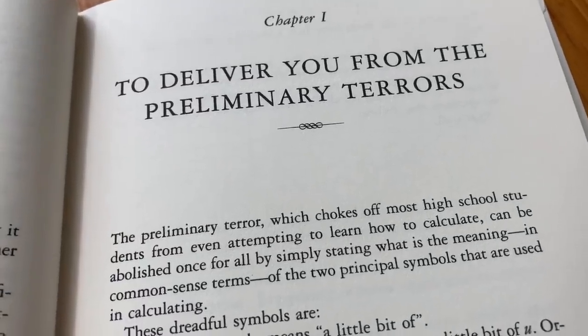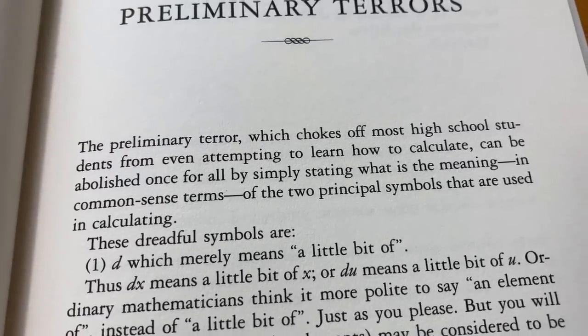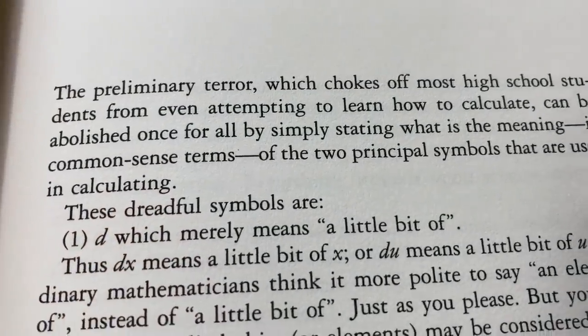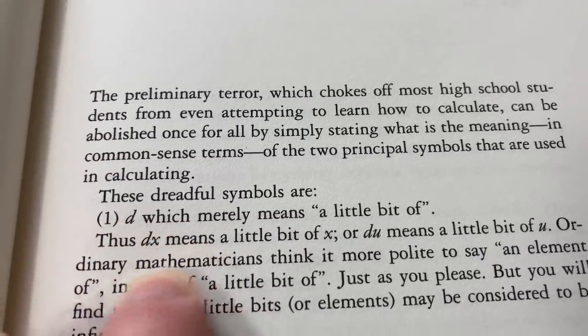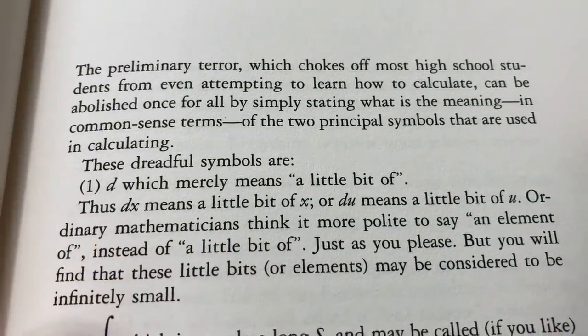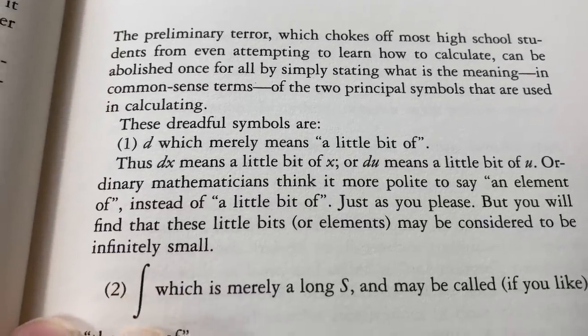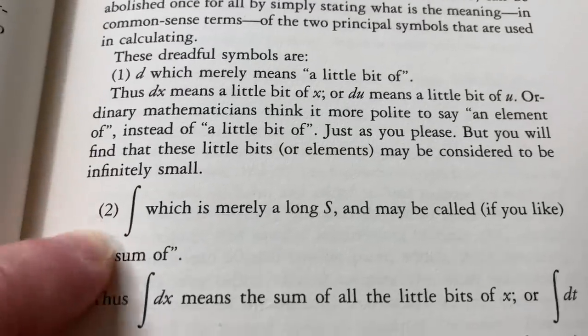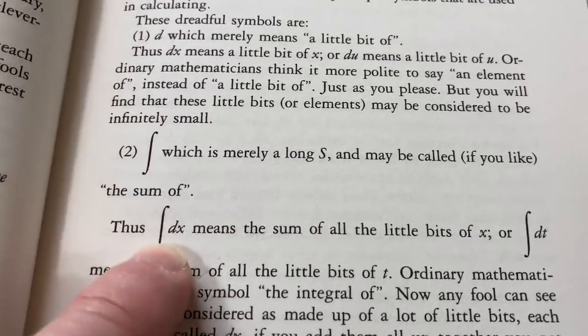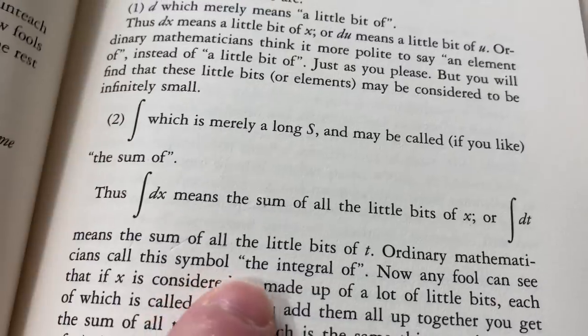This is chapter one: to deliver you from the preliminary terrors. The preliminary terror which chokes off most high school students from even attempting to learn how to calculate can be abolished once for all by simply stating what is the meaning, in common sense terms, of the two principal symbols that are used in calculating. These dreadful symbols are: one, d, which merely means a little bit of, thus dx means a little bit of x, or du means a little bit of u. Ordinary mathematicians think it more polite to say an element of, instead of a little bit of, just as you please. But you will find that these little bits or elements may be considered to be infinitely small. And then here we have this elongated s, which you probably know as the integral symbol. Which is merely a long s, and may be called, if you like, the sum of. So the elongated s with the dx means the sum of all the little bits of x.